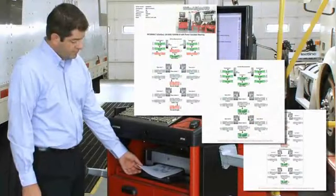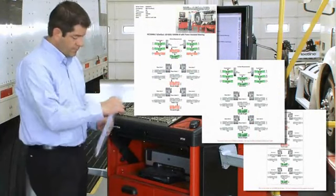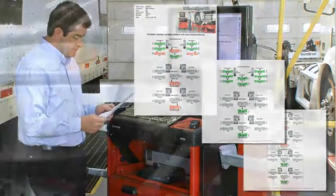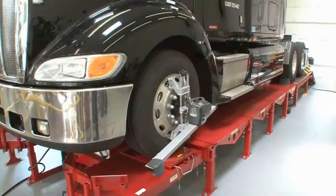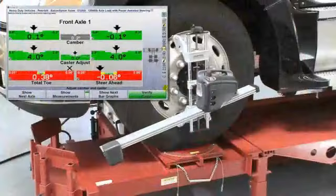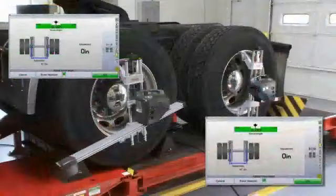Can you print before and after measurements to document the work performed? And most importantly, is the aligner truly a total system, allowing measurement and correction of all axles, front and rear?